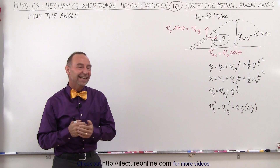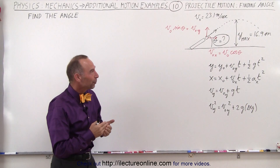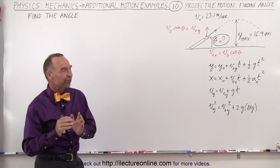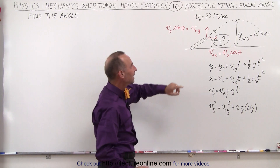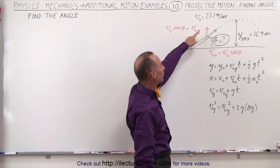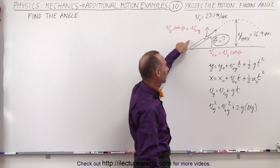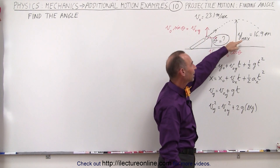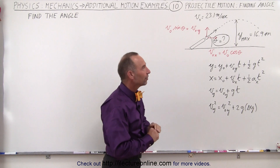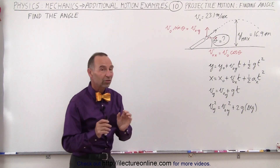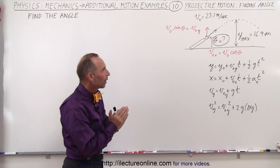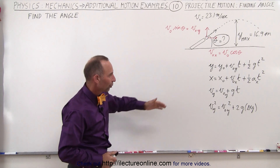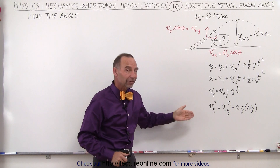Welcome to our lecture online. In this example we're going to do a projectile problem, a little bit different from the norm. We are given the initial velocity to be 23.1 meters per second and we're told that the projectile reaches a maximum height of 16.9 meters. The question is what angle is required to reach that maximum height, and we're going to need the equations of kinematics.